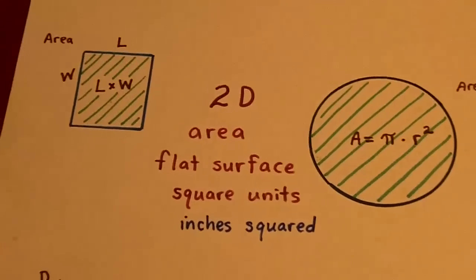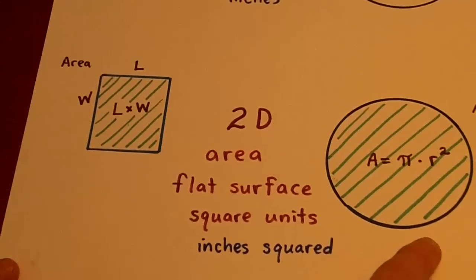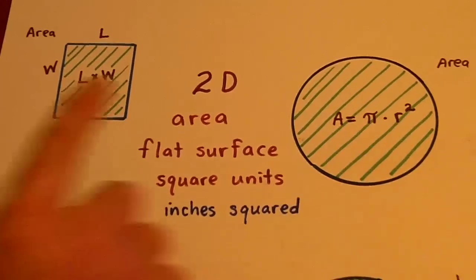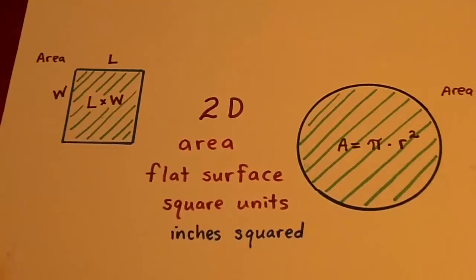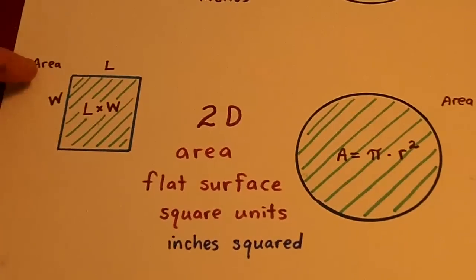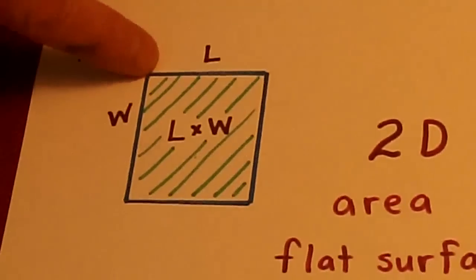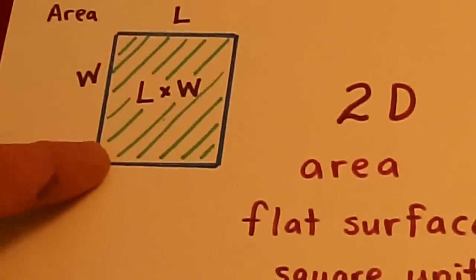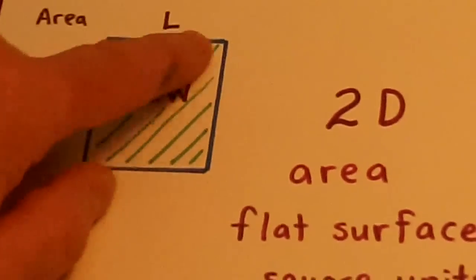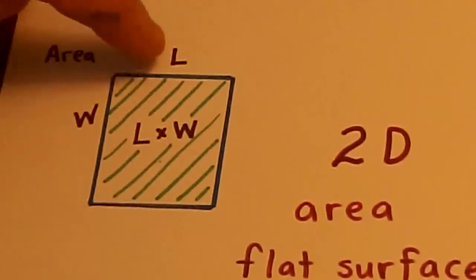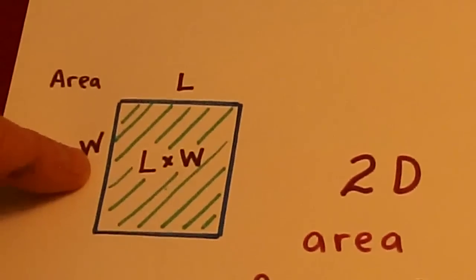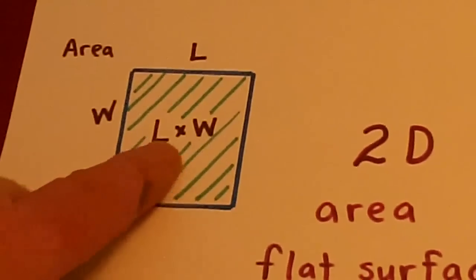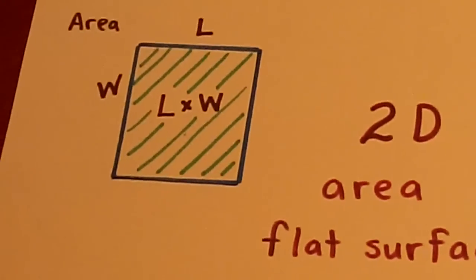Now, if we go to two-dimensional, two-dimensional means the flat surface area of a geometric object. So if we take the area of a rectangle, we take its length, we multiply by its width to find out how many square blocks are here. So if L is 3 and W is 4, 3 times 4 will be equal to 12 blocks.